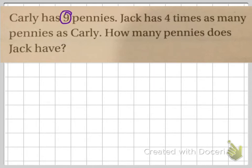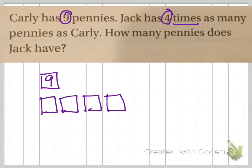Carly has 9 pennies and Jack has 4 times as many pennies as Carly. Think about the important information and then set up your problem. We know that Carly has 9 pennies and Jack has 4 times as many as Carly. So, Jack has 36 pennies.